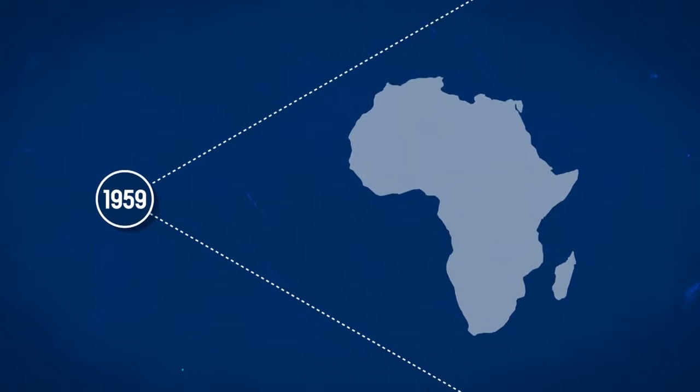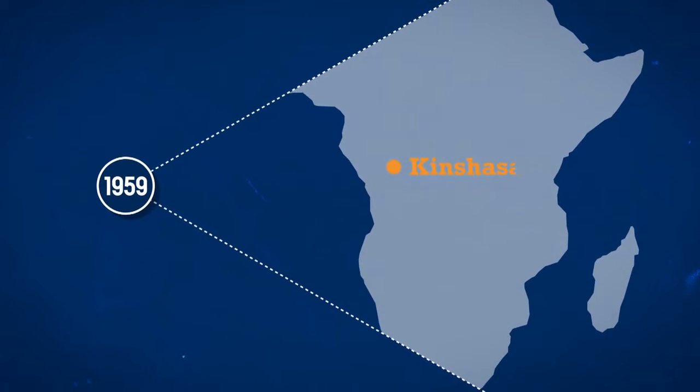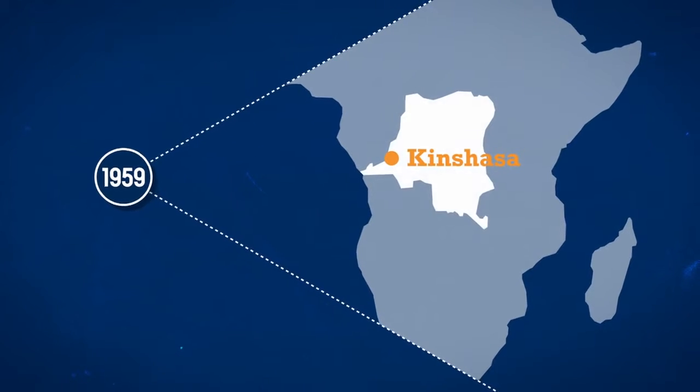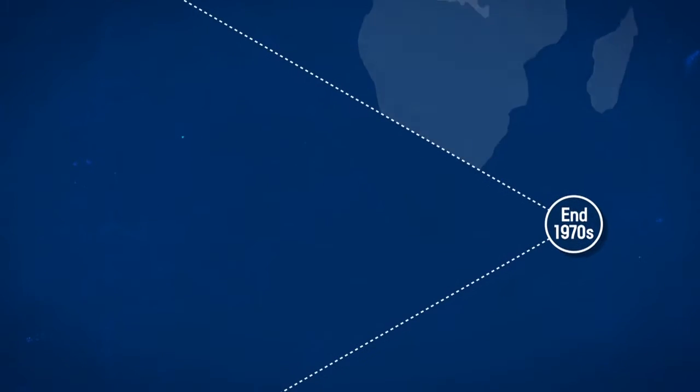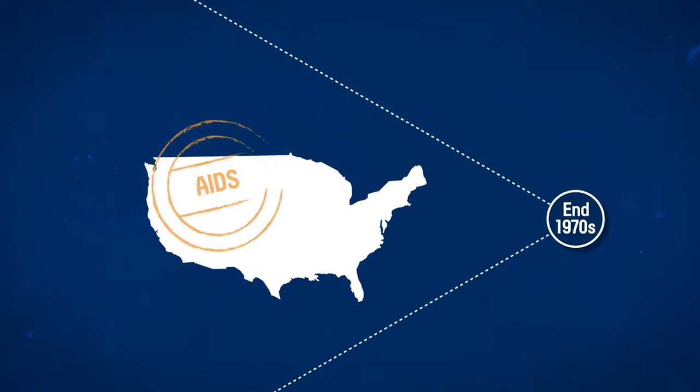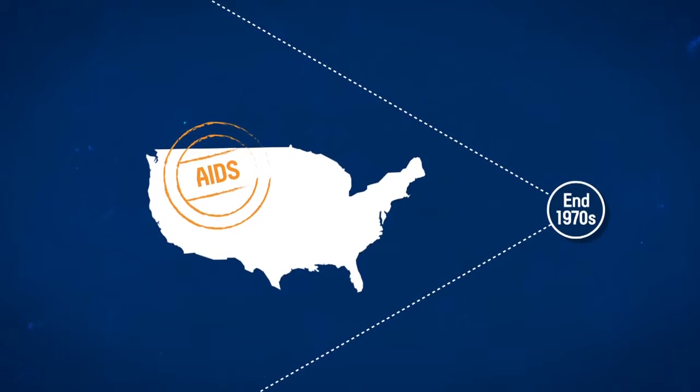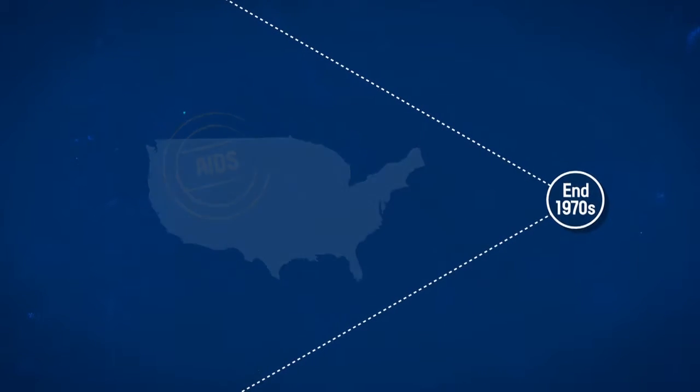The first sign of HIV infection in a human was reported in 1959 in Kinshasa in Belgian Congo. But it was towards the end of the 1970s in the United States that HIV-AIDS really burst onto the scene.